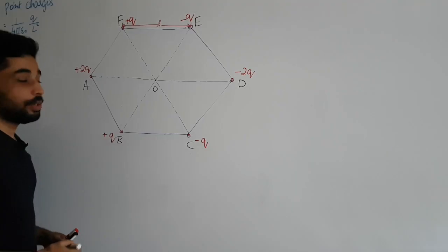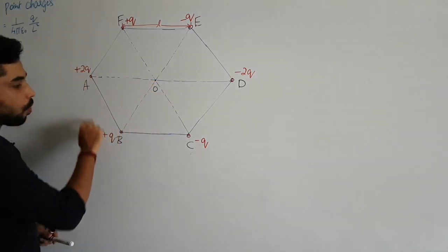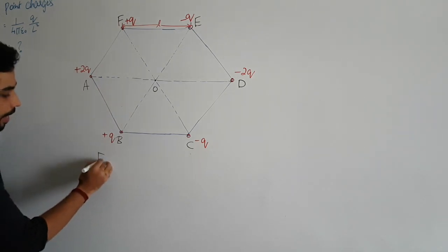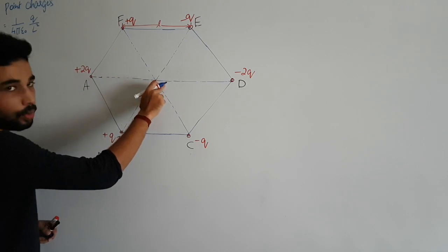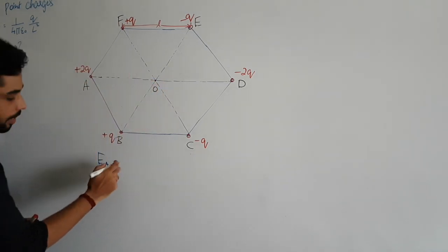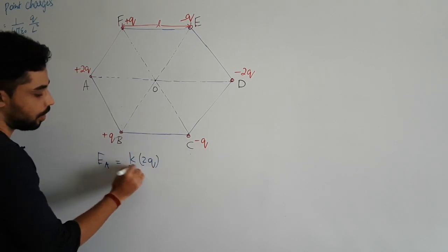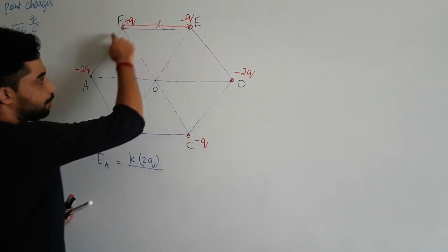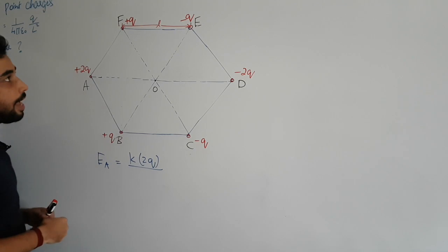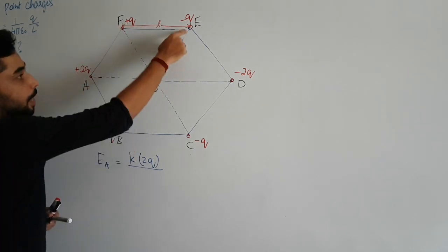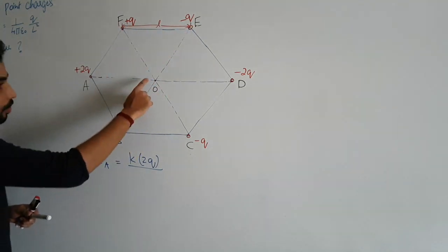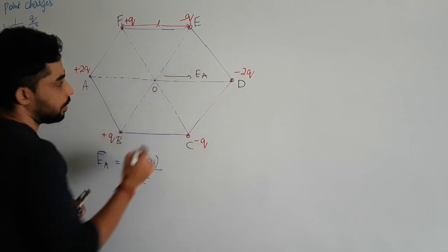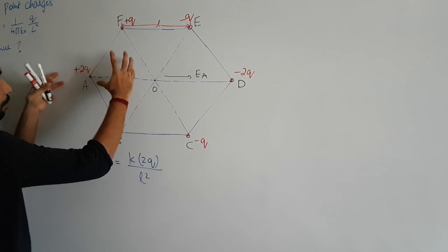Now let's apply this to the question. To find the electric field at O, we find contributions from all charges one by one and add them vectorially. Starting with charge plus 2q at vertex A: EA equals k times 2q divided by the distance squared. Since this is a regular hexagon with side L, by symmetry the distance from A to O is L, so the denominator is L squared.